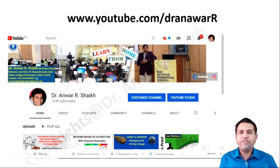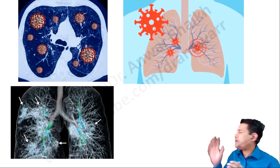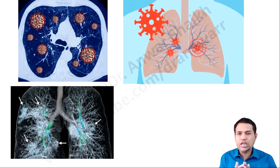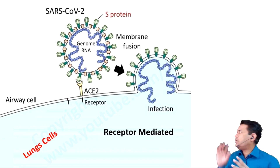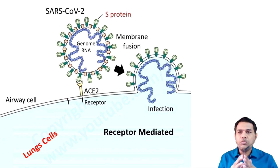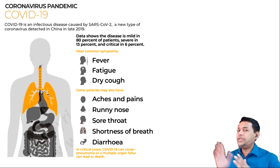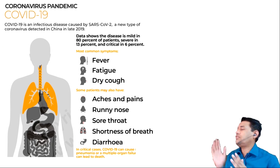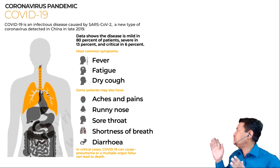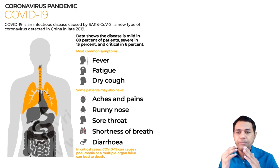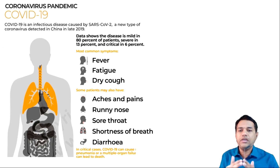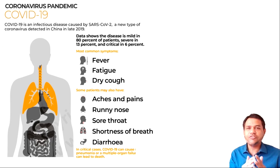The coronavirus infects our upper respiratory tract, including the lungs, leading to pneumonia. The coronavirus enters lung epithelial cells via the angiotensin-converting enzyme 2 (ACE2) receptor through the endocytosis pathway. Data shows the disease is mild in 80% of patients, severe in 13%, and critical in 6%. Common symptoms include fever, fatigue, dry cough, runny nose, sore throat, shortness of breath, and diarrhea. In critical cases, COVID-19 can cause pneumonia or multiple organ failure leading to death.